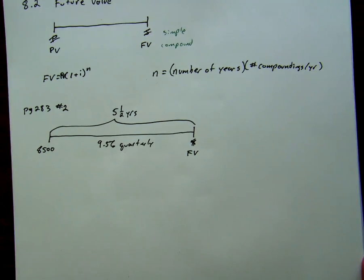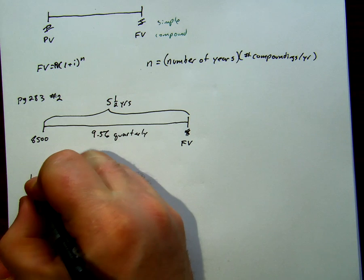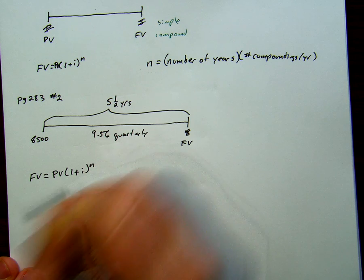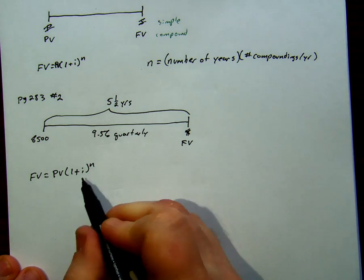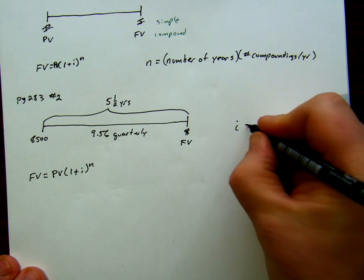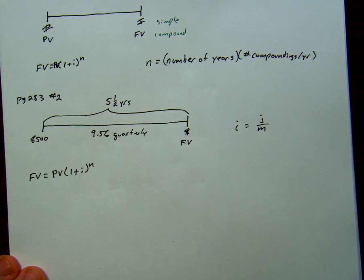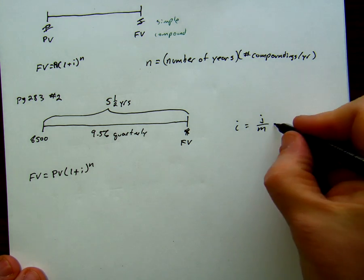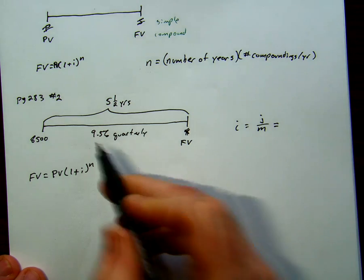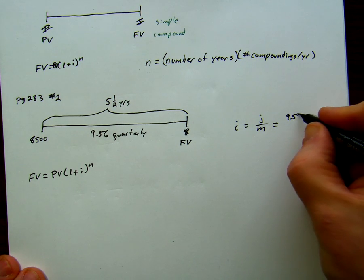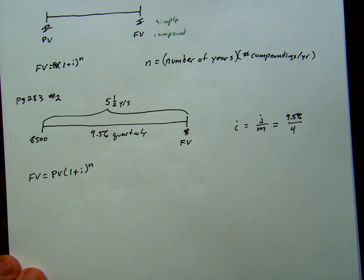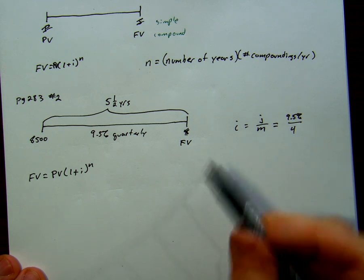We have to do a couple of calculations first. We know that our future value is equal to our present value, 1 plus i to the n. But we don't know what i is. First of all, we know that i is equal to j over m. Our periodic interest rate is our nominal rate over compoundings per year. Our nominal interest rate was 9.5%, so 9.5% over quarterly is four times per year.